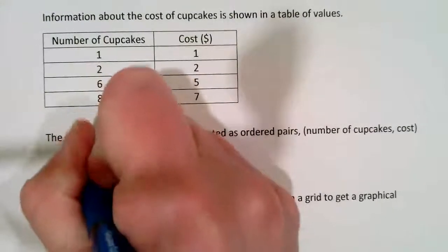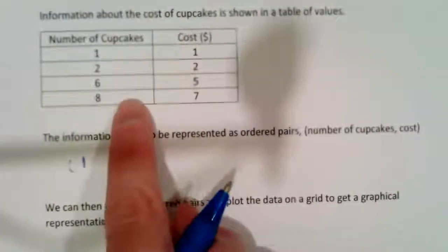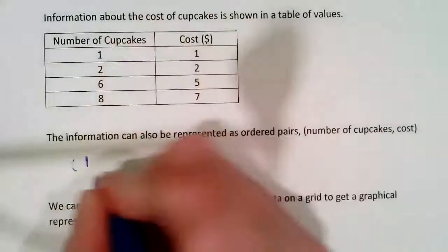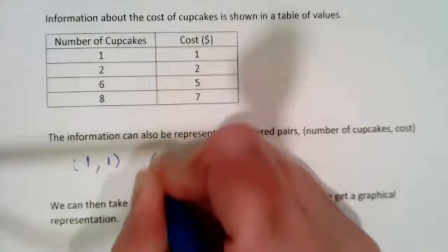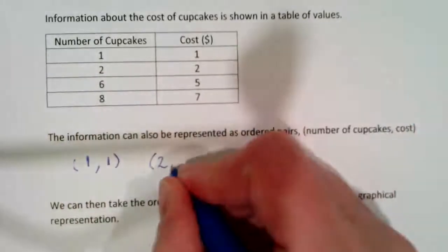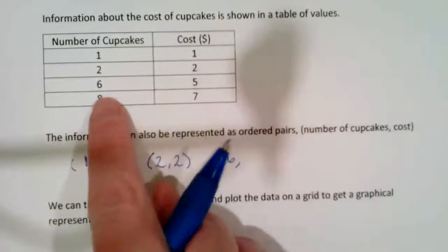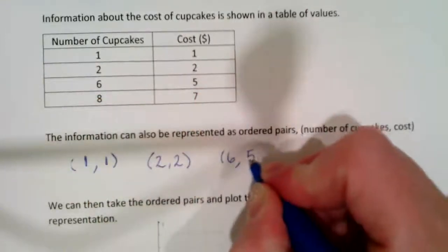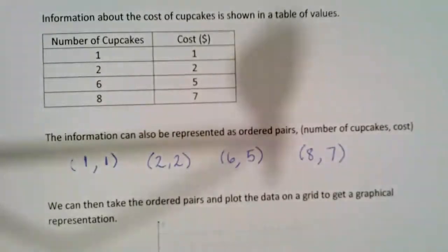So in this case, the first number always represents the numbers in the first column, which is one, and the cost is one. When we have two cupcakes, the cost is $2. When we have six cupcakes, the cost is $5 and eight cupcakes corresponds to $7.